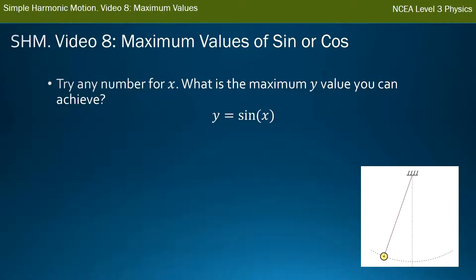It doesn't matter what numbers you put in, with a sine function, the biggest number you can get out is 1. It doesn't matter if you put in sine a million, or sine a trillion, or sine 1, or sine negative 1, the largest value you get is 1.